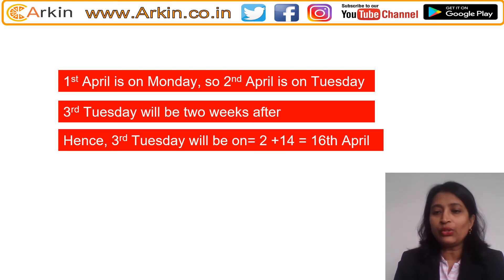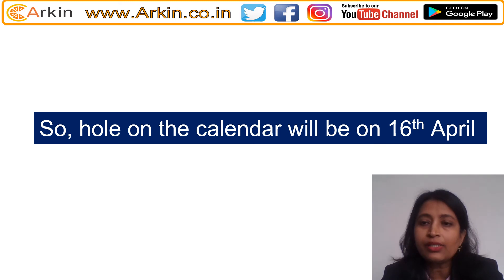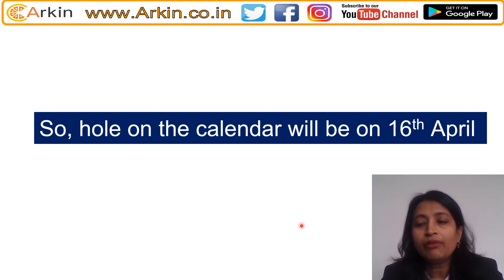So the third Tuesday is on 16th April. That means the hole on the calendar will be on 16th April. That is the answer — the hole on the calendar will be on 16th April. I hope you all understood. Thank you.